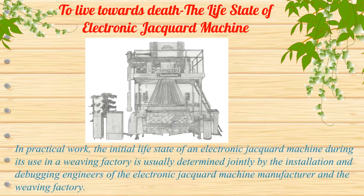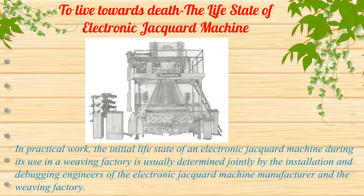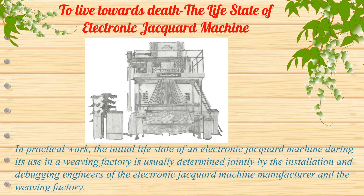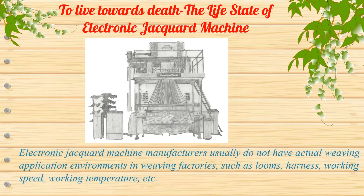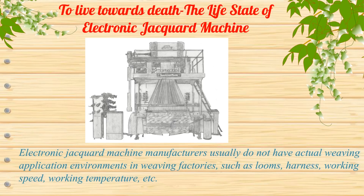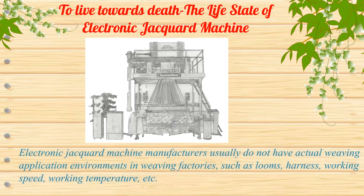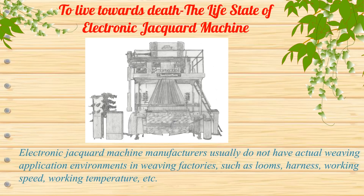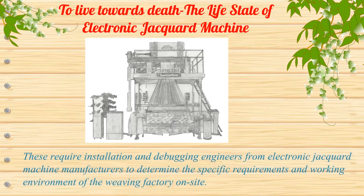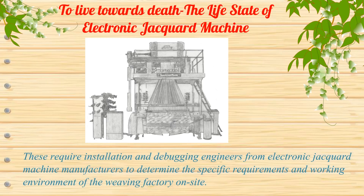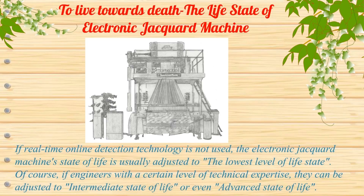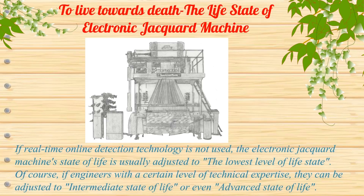In practical work, the initial life state of an electronic jacquard machine during its use in the weaving factory is usually determined jointly by the installation and debugging engineers of the electronic jacquard machine manufacturer and the weaving factory. Electronic jacquard machine manufacturers usually do not have actual weaving application environments such as looms, harness, working speed, or working temperature. These require installation and debugging engineers to determine the specific requirements and working environment of the weaving factory on site. If real-time online detection technology is not used, the electronic jacquard machine's state of life is usually adjusted to the lowest level.